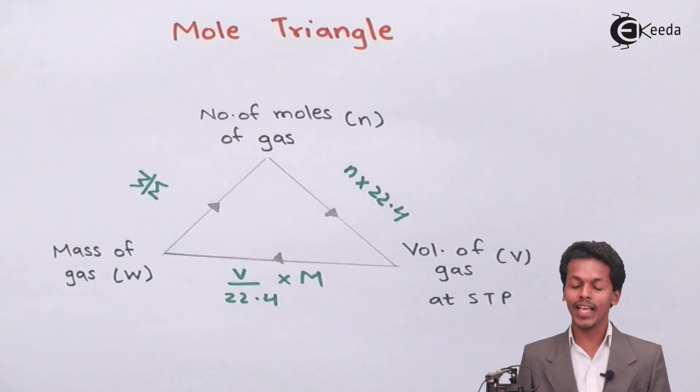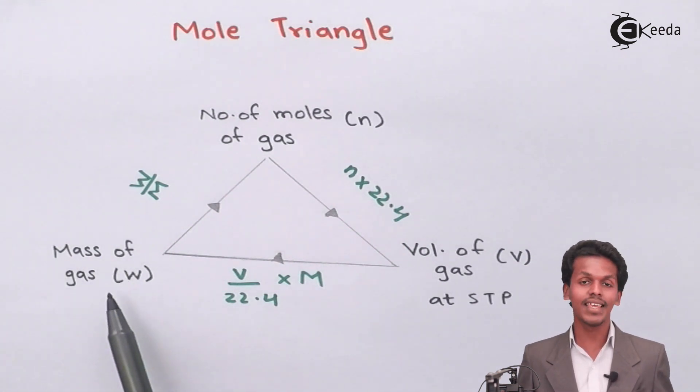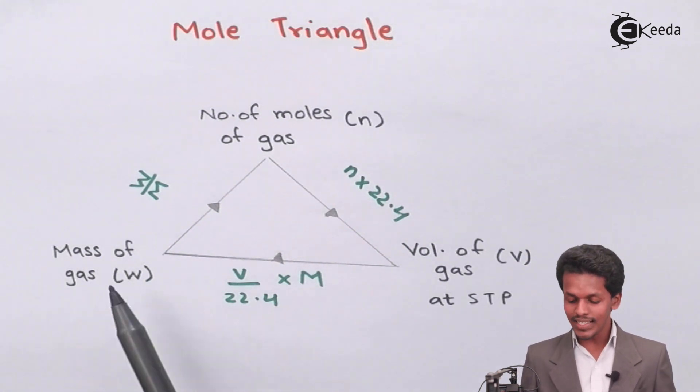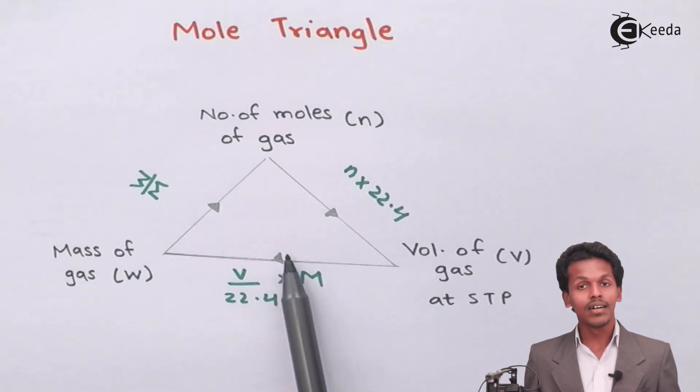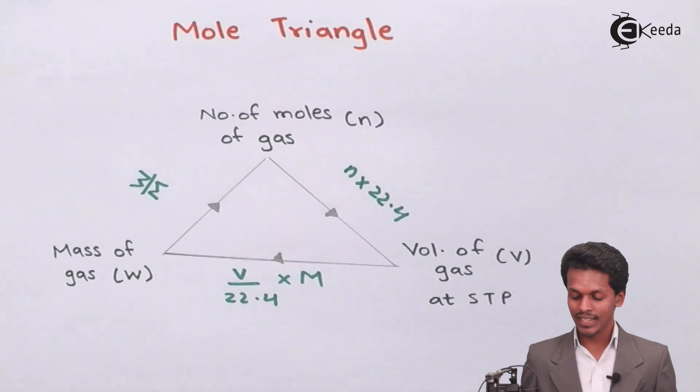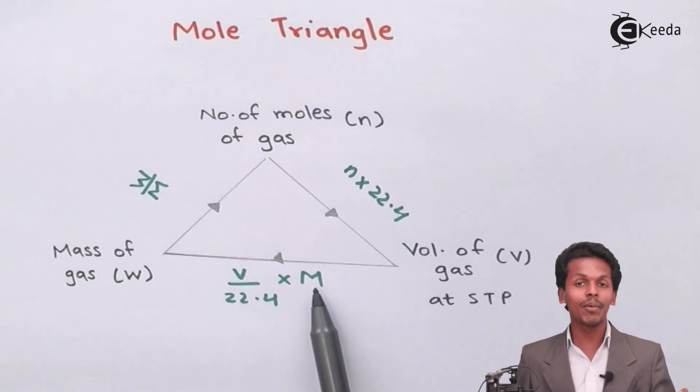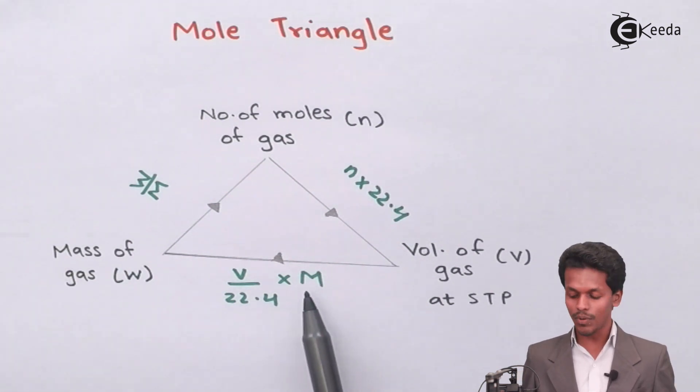Now talking about the next and last one. In this case, how can we calculate the mass of the gas? As you can see, this term is connected to the volume of the gas in the format: volume divided by 22.4 liters, multiplied by the molar mass. In this case, M is the molar mass.